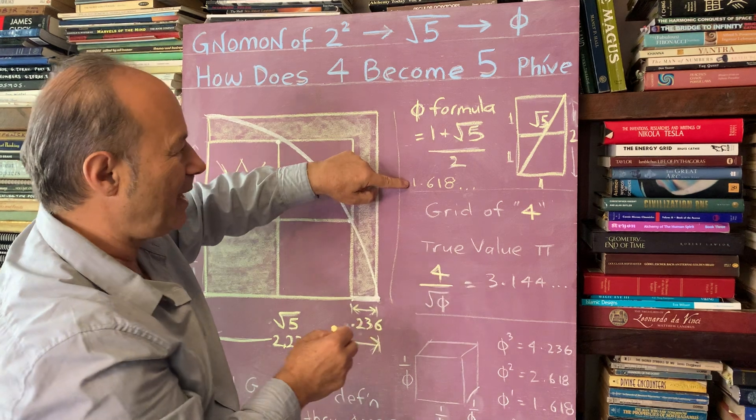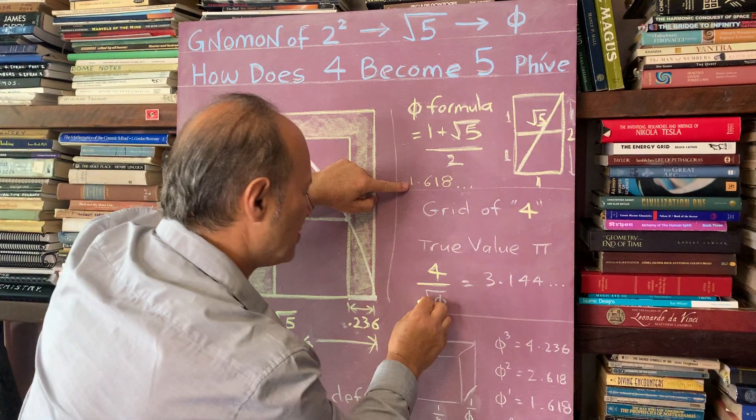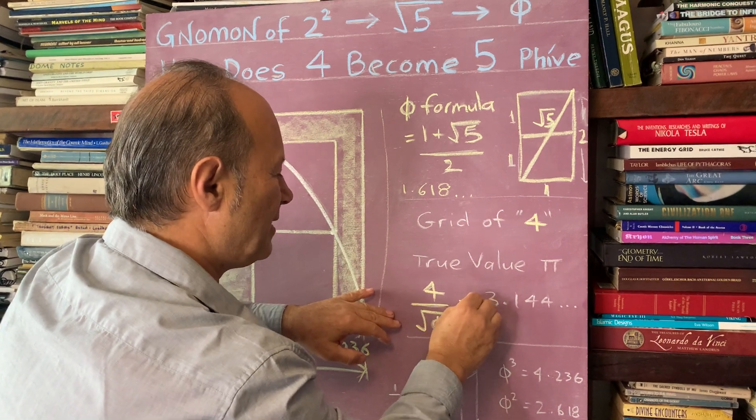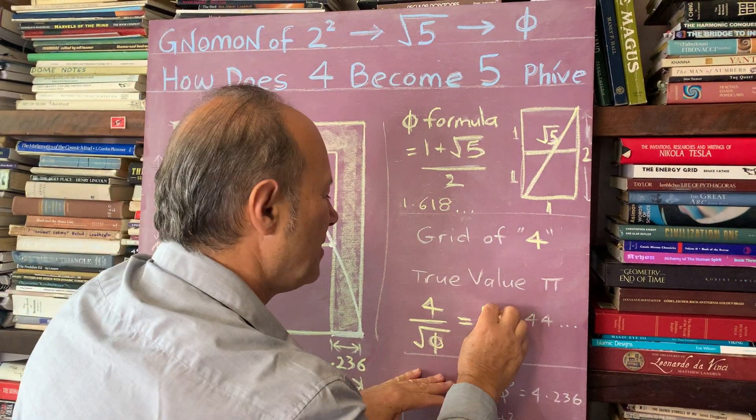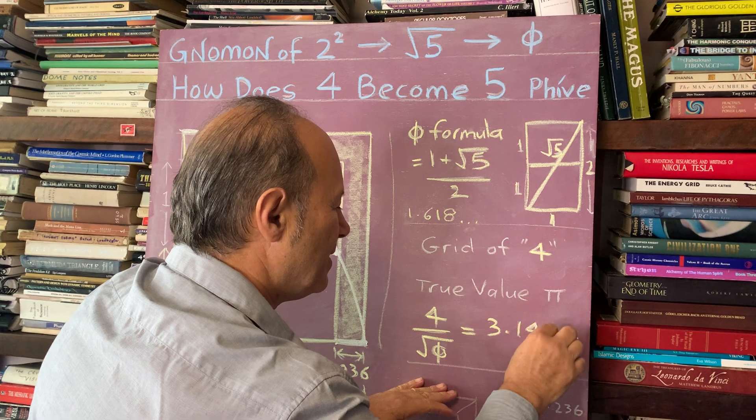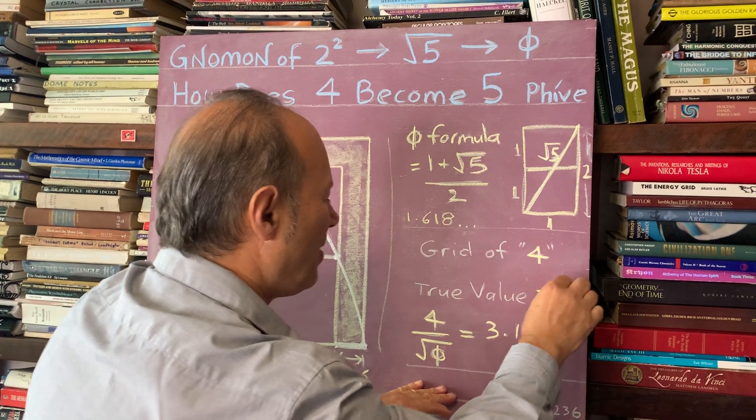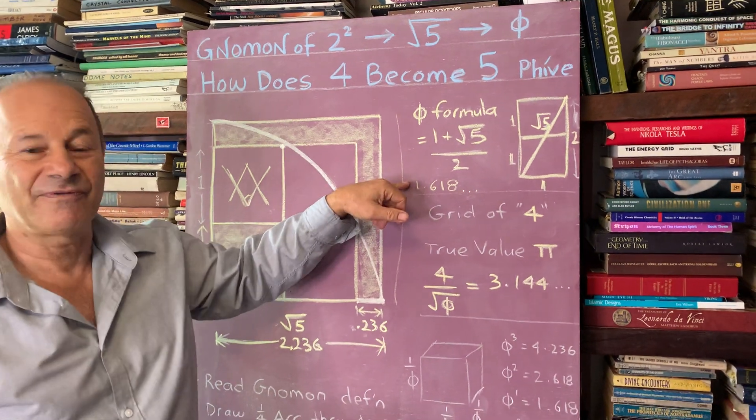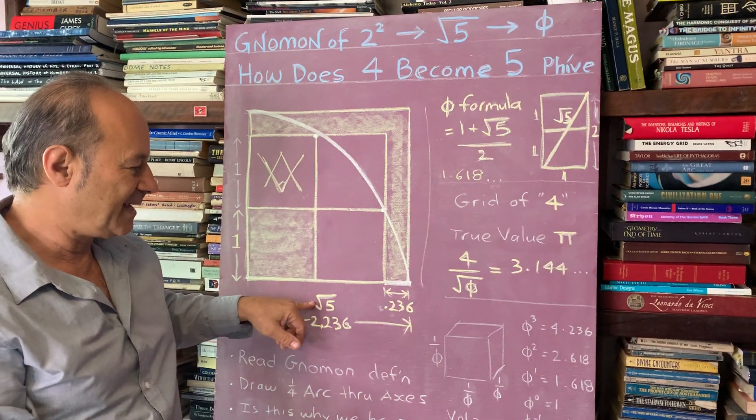when we divide it by the square root of phi, which happens to be 1.272, we end up with the true value of pi called 3.144. So this is the true value of pi when we understand that all the harmonics of the circle are based on root 5. Root 5 is the key to everything.